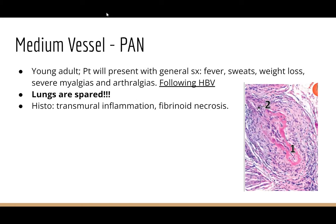Medium vessel — Polyarteritis nodosa: young adult presenting with fever, sweats, weight loss. Very indicative: association with HBV (hepatitis B) infection. The biggest thing to highlight and remember is that the lungs are spared in this disease. Many organs are affected but not the lungs — highlight that for your exam. Histologically you will see transmural inflammation and fibrinoid necrosis.